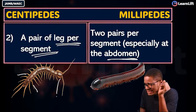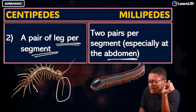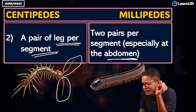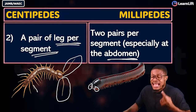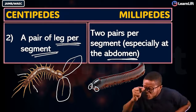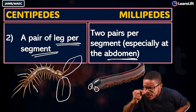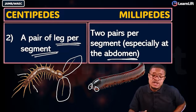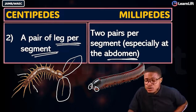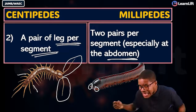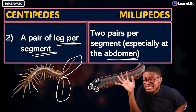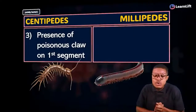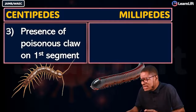Notice the antennae: centipedes have long antennae, while millipedes have very short — almost invisible — antennae. So the one with longer antennae is the centipede, and the one with shorter antennae is the millipede.